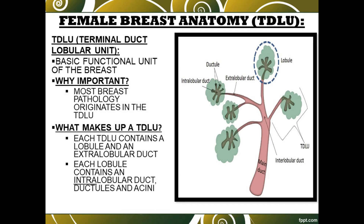Each TDLU contains a lobule and an extra lobular duct, and each lobule contains an intralobular duct, ductules, and acinar cells, or acini.